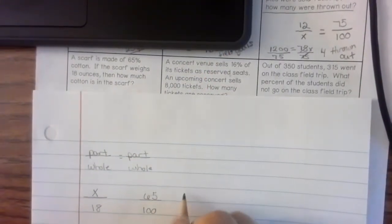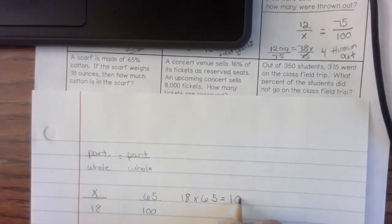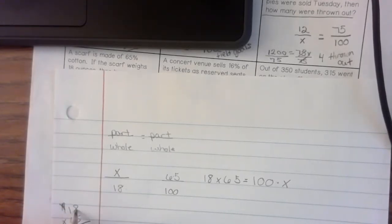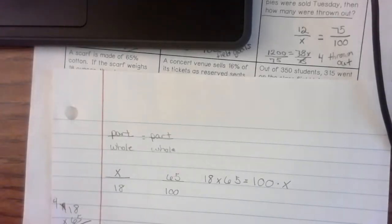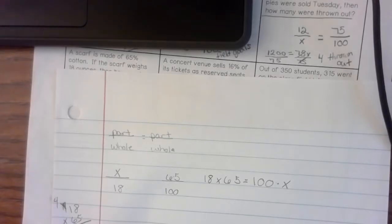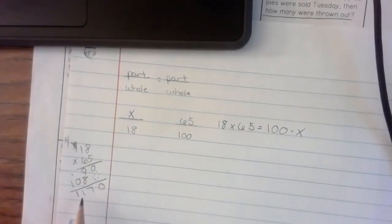So, now I'm going to cross multiply. 18 times 65 equals 100 times X. Let me come over here. It's 40. That turns forward to 9. Then I'm going to scratch it out because I'm done with it. I need to leave my placeholder. 6 times 8 is 48. 6, 7, 8. That's 6 plus 4 is 10. So, I have 1,170.